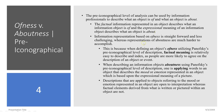At the pre-iconographical level of analysis, we describe what an object is of and what it's about. The factual information represents an object at the pre-iconographical level. Questions you can ask yourself are: what is the object made of? What was the object used for? What is this object? That's what it's of — the factual meaning. When describing the aboutness at the pre-iconographical level, we're applying words to the object that express a mood or emotion. That's the aboutness.